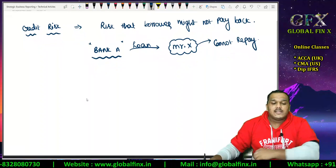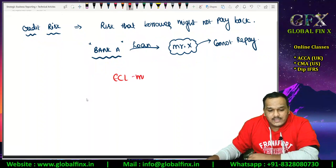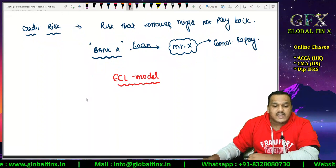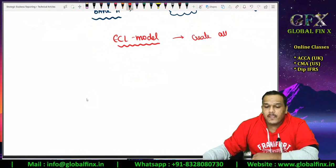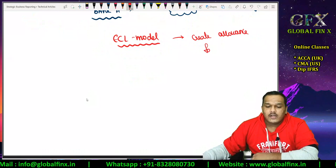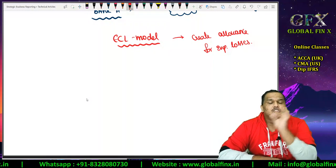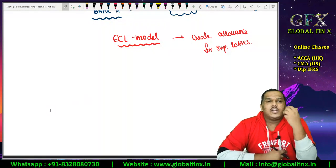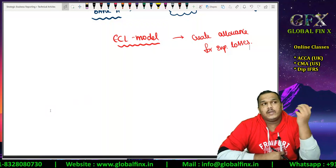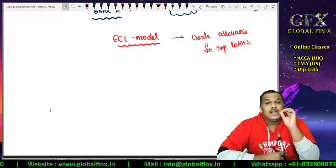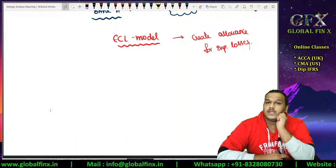What exactly is the ECL — expected credit loss model? The ECL model states that you have to recognize a provision or an allowance for the expected losses. As simple as that — create an allowance for expected losses. For example, I have given a loan of $10,000 to Mr. A and I am worried he will not be able to repay the entire $10,000 — he will only pay me $8,000. In this case I have to create an allowance for the expected loss of $2,000.